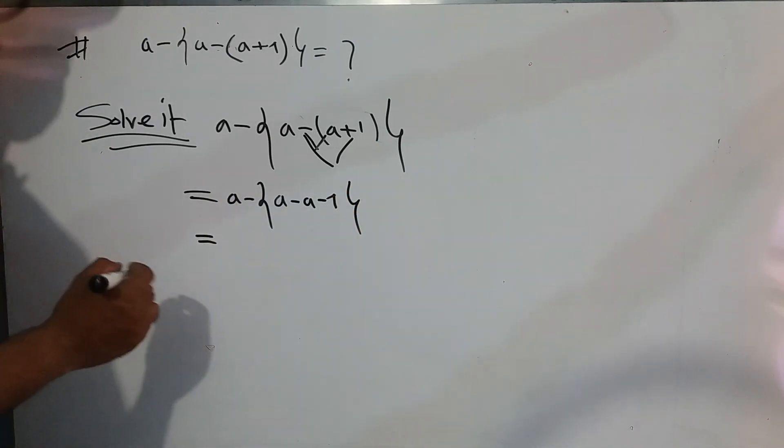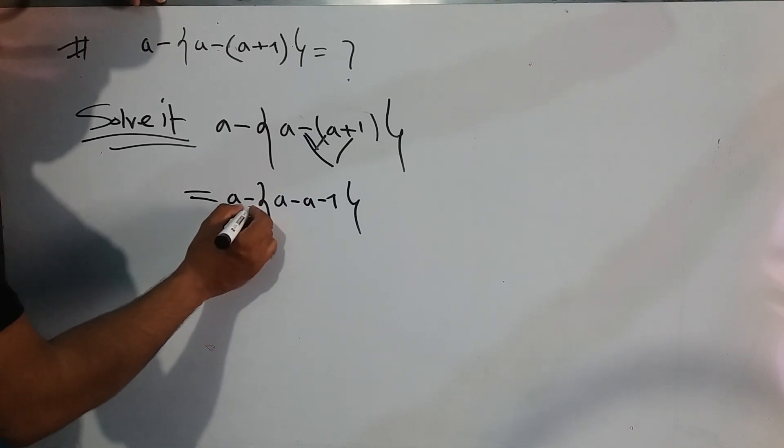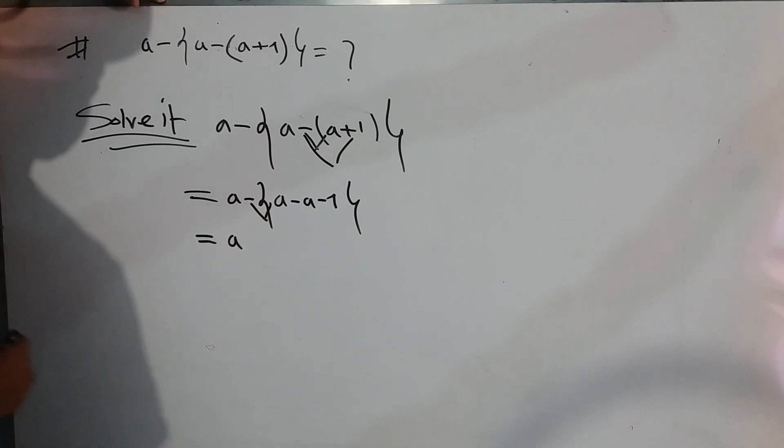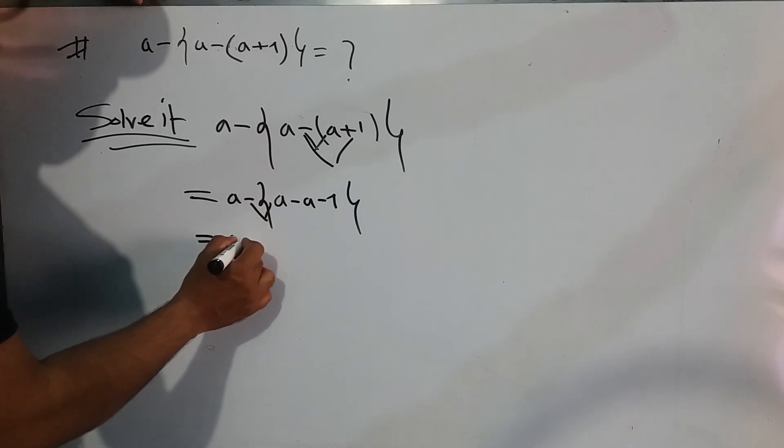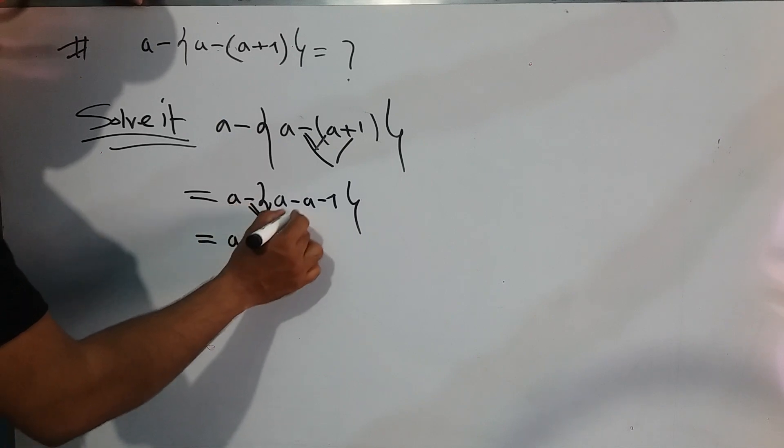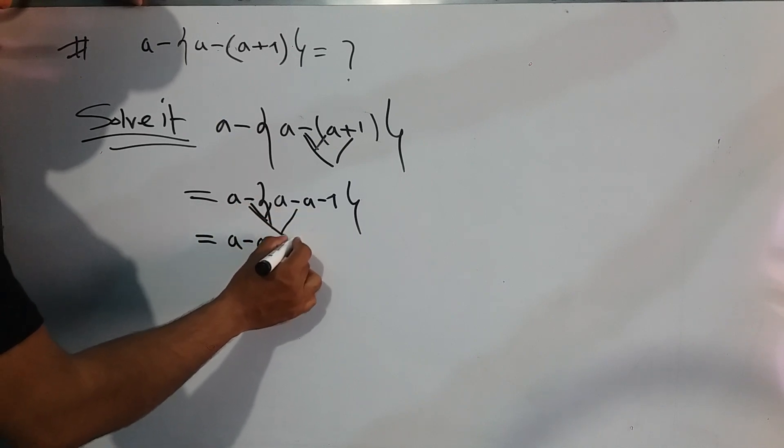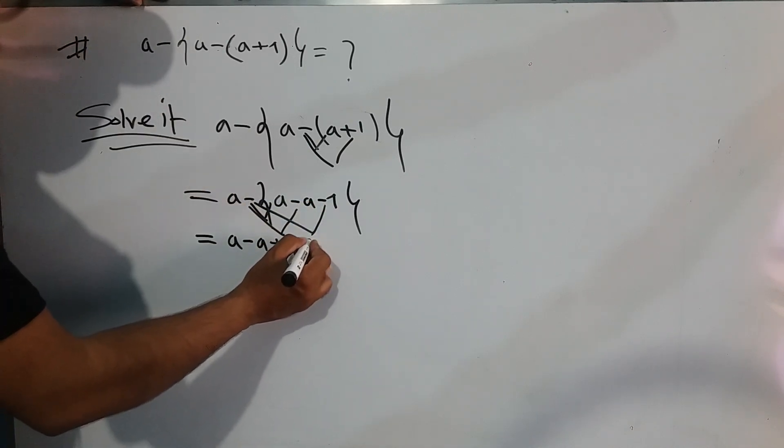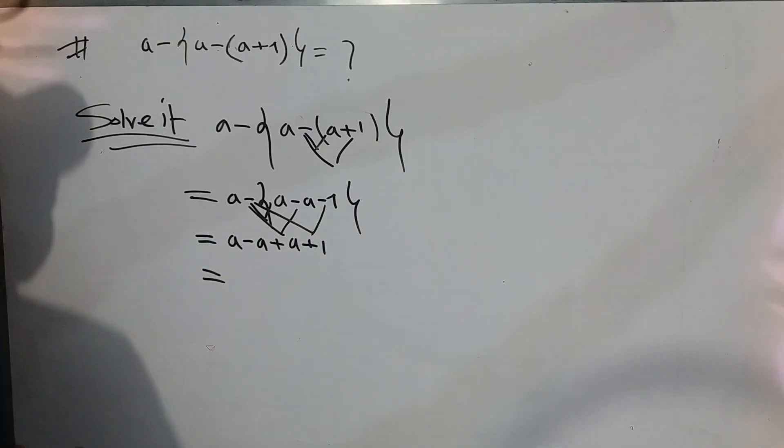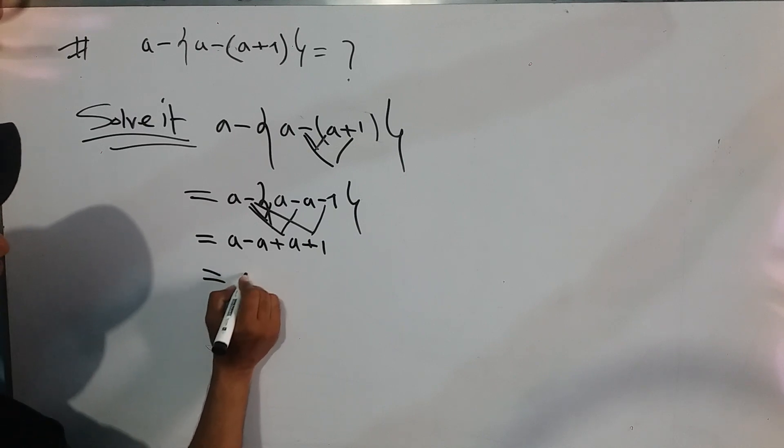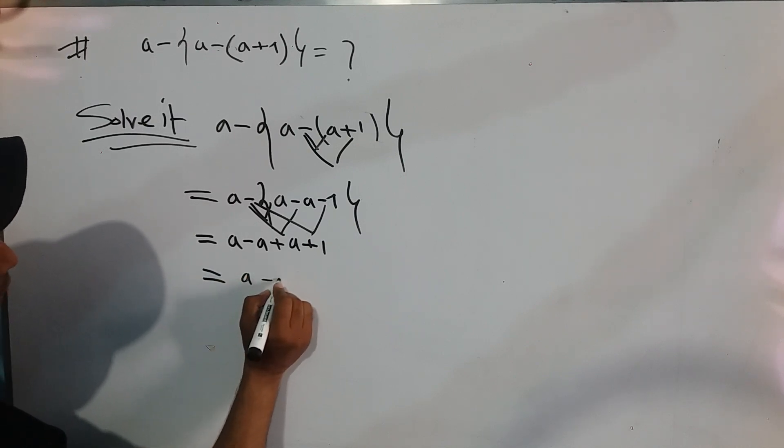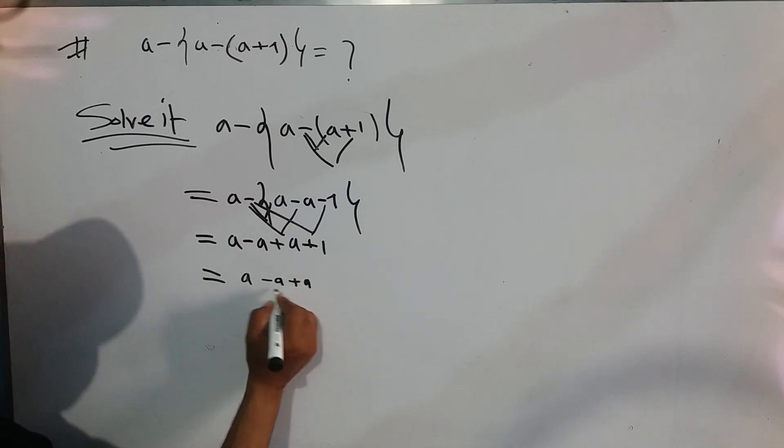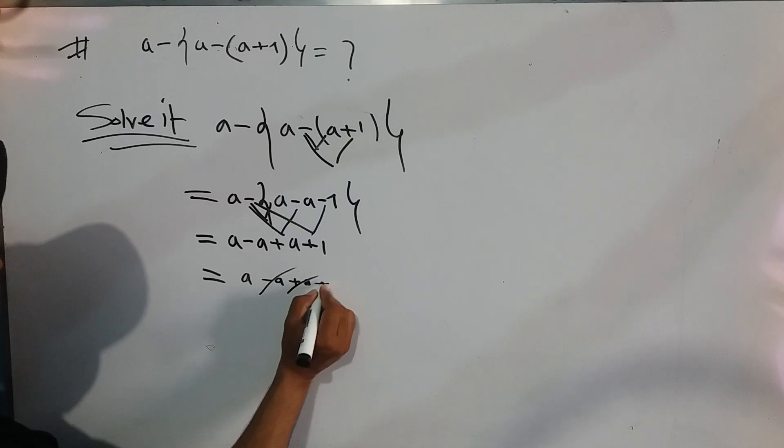Again we can write down here a minus a minus, so minus and plus we can write down minus a, minus and minus we can write down plus a, minus and minus we can write down plus one. So we can calculate here, we are following a minus a minus a and plus a out and plus one.